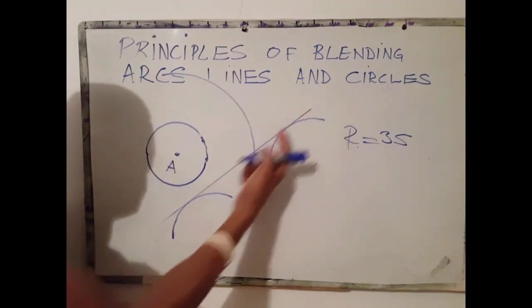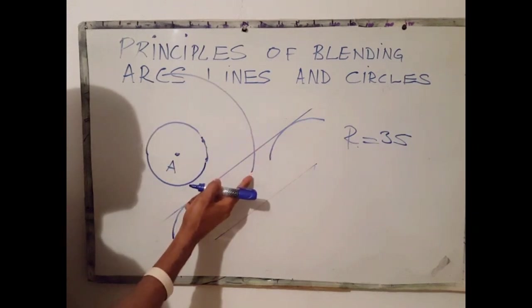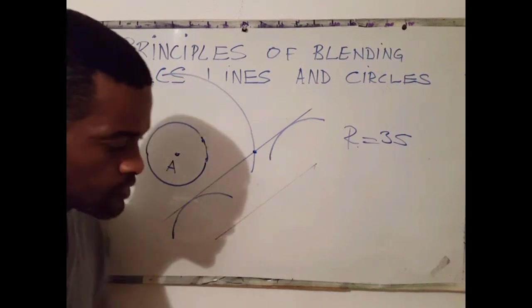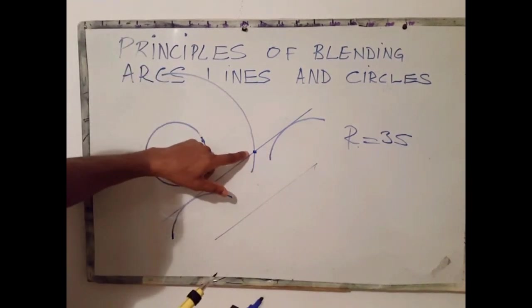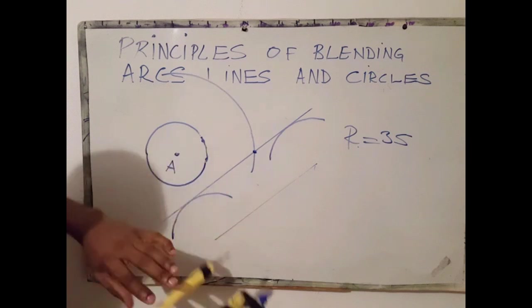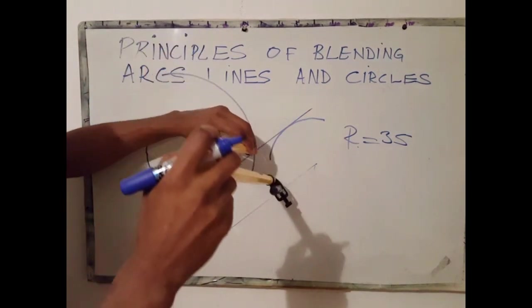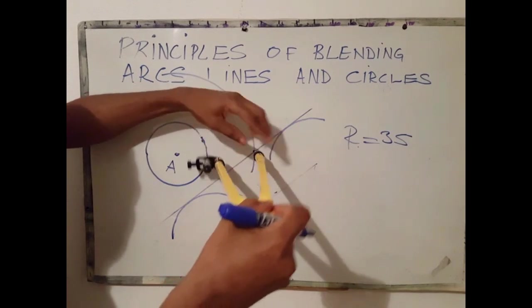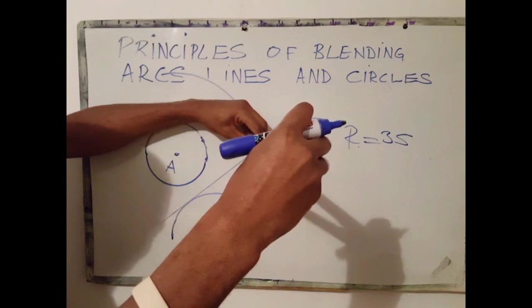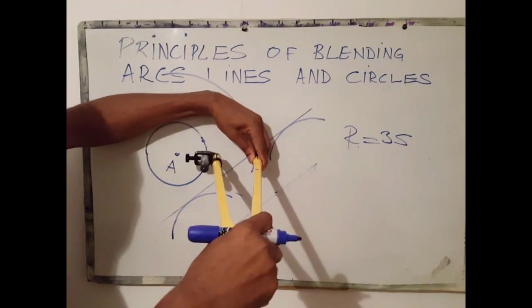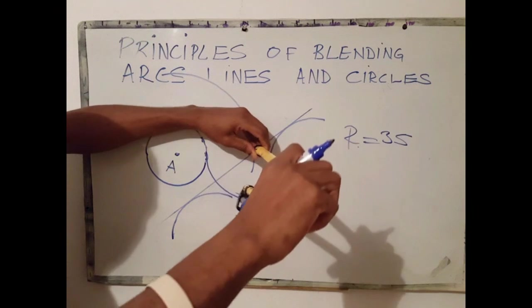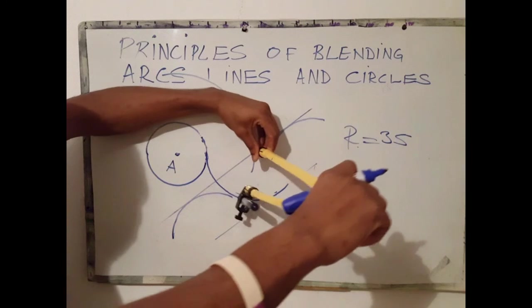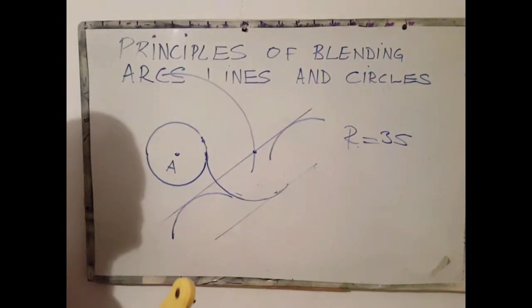At a point where the parallel line cuts the arc, is our center. Our next step is to use this, our third center, as our center point, scribe an arc. And that's it.